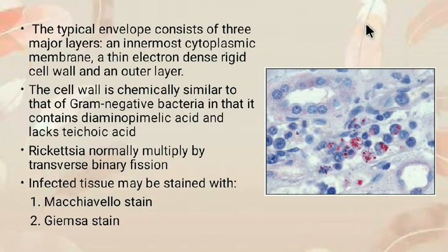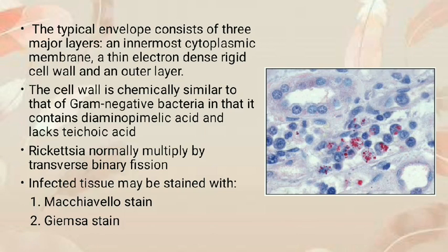Rickettsia normally multiply by transverse binary fission. Under poor nutritional conditions, the rickettsia cease dividing and grow into long filamentous forms. Immediately after division, they engage in extensive movements through the cytoplasm. Although gram-negative organisms, they weakly take the counterstain safranin. They are stained with Macchiavello stain, which makes the organisms bright red against a blue background of tissue, and Giemsa stain, which makes bluish-purple organisms.